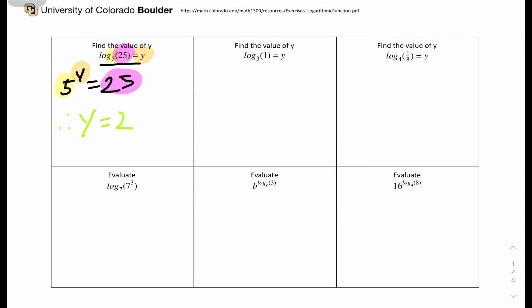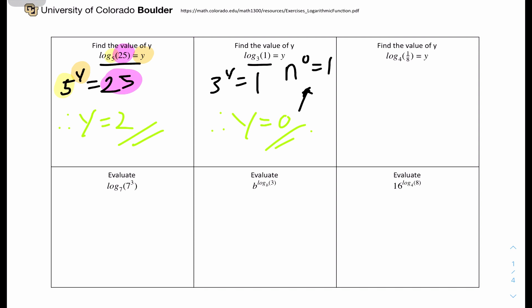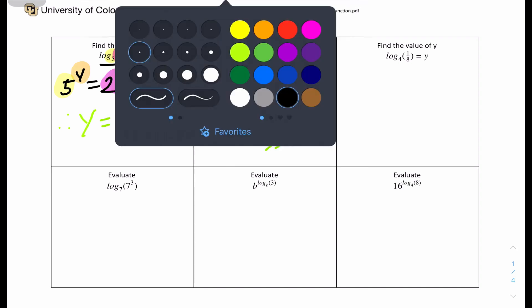Number 2: find the value of y in log base 3 of 1 equals y. Let's rewrite this as 3 to the power of y equals 1. Anything to the power of 0 equals 1, so it's a trick question — y equals 0. For example, even 10,000 to the power of 0 equals 1. That's an important note: anything to the power of 0 equals 1.